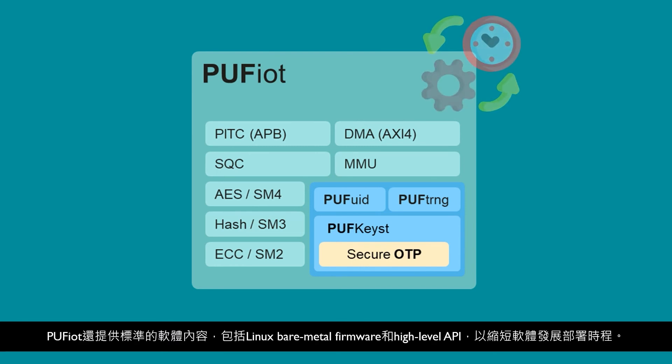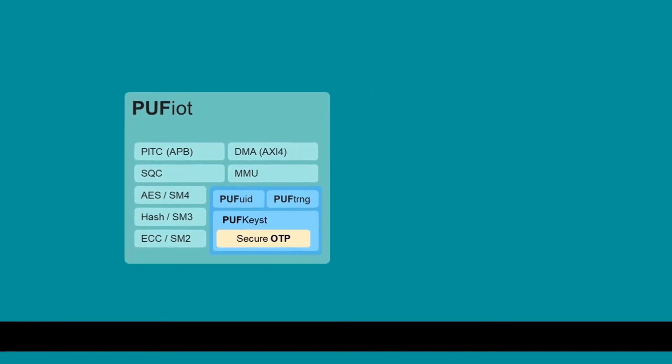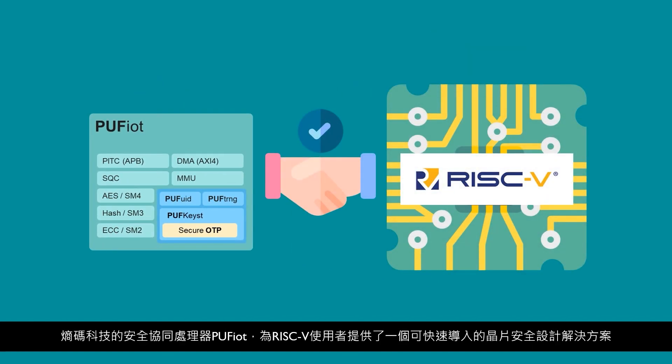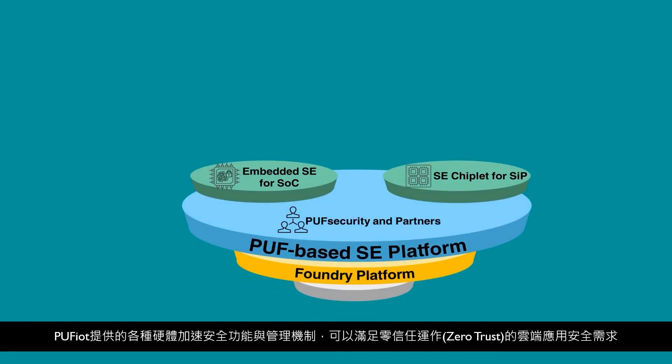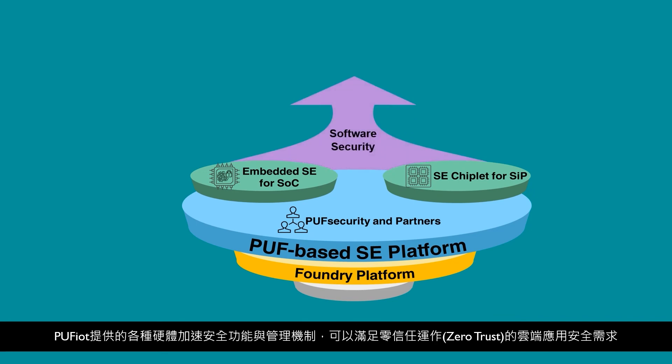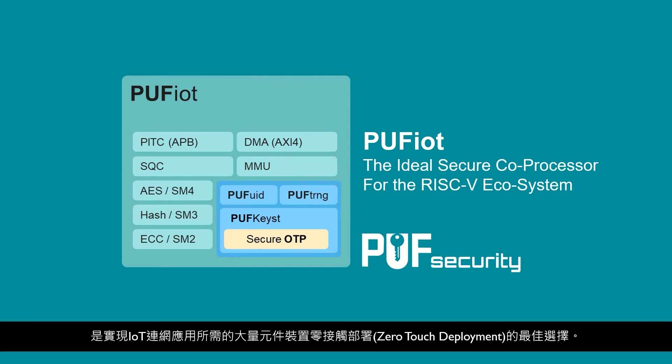Finally, the accompanying software development kit, including example firmware and high-level APIs, helps accelerate software development and deployment. Puff IoT works perfectly with RISC-V as the secure coprocessor to enhance system security and fill in the gap of security solutions in the RISC-V ecosystem. Puff IoT also meets the requirements of zero-trust security in cloud applications, and with all the functionalities and features mentioned, it enables the zero-touch deployment needed in the world of IoT.